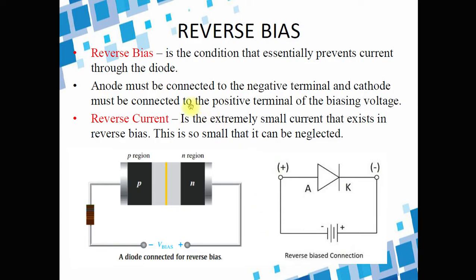The conditions for reverse bias: the negative side of the voltage source must be connected to the positive side or anode of the diode, and the positive side of the voltage source should be connected to the negative side or cathode of the diode. In that case, we have reverse bias, meaning there is no large current in the device. But we do have what we call a reverse current — an extremely small amount of current that exists in reverse bias, so small that it can be neglected. The reverse bias condition essentially prevents current through the diode.